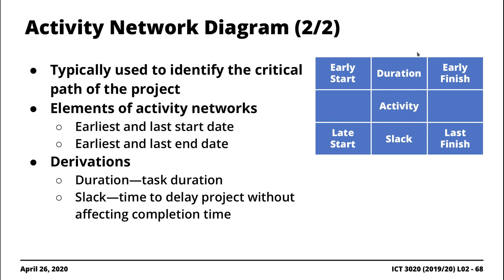Each activity is represented as a block. The block has the early start date on the top left corner, followed by the duration, and then the early finish date on the top right. The middle shows the activity name. The bottom row contains the late start date, the slack, and the late finish date in sequence.